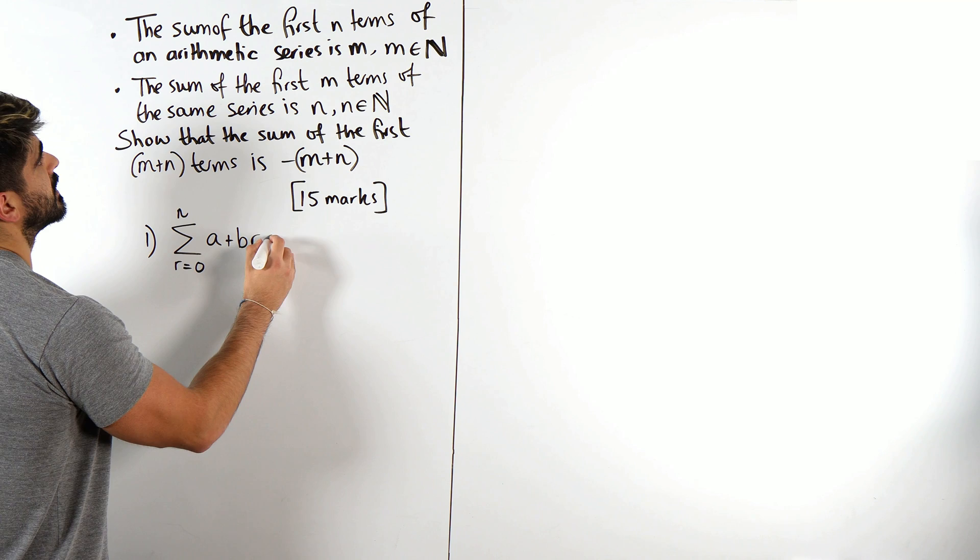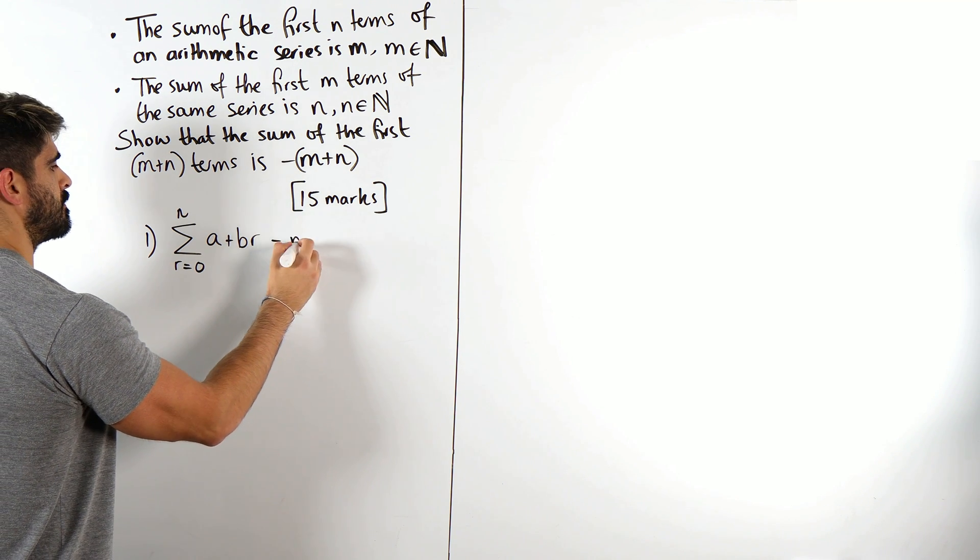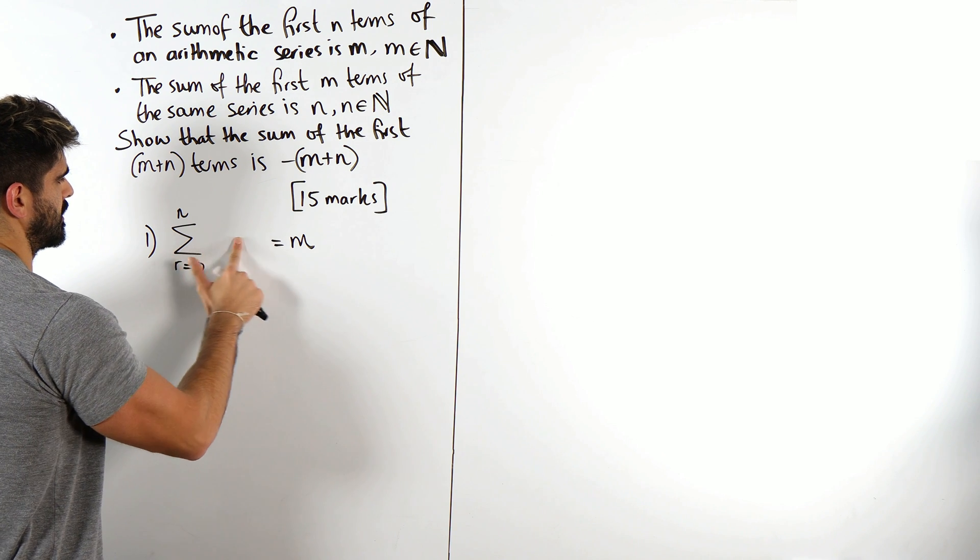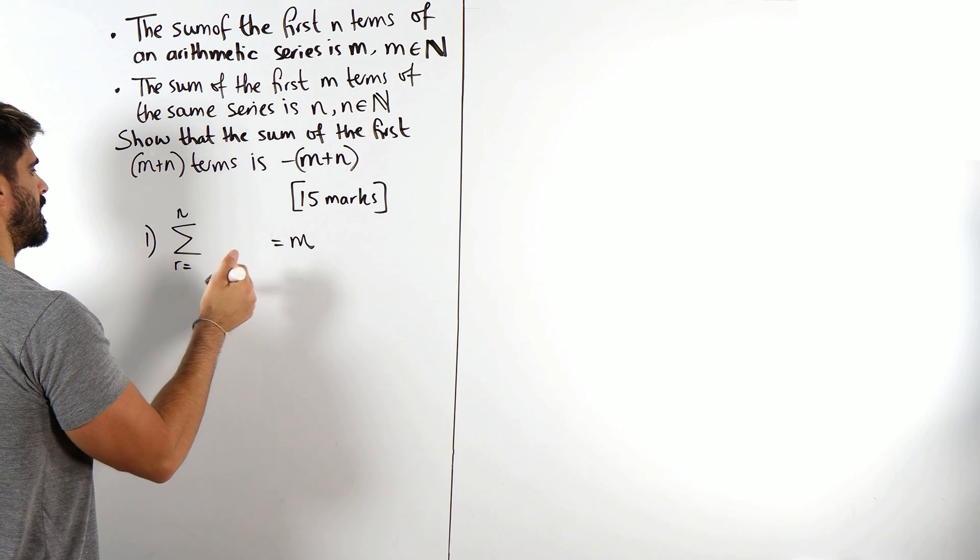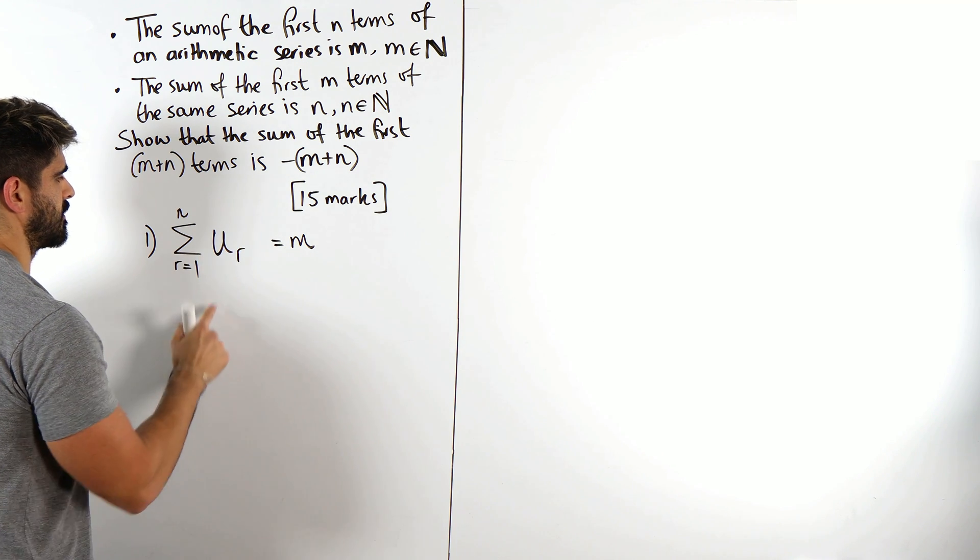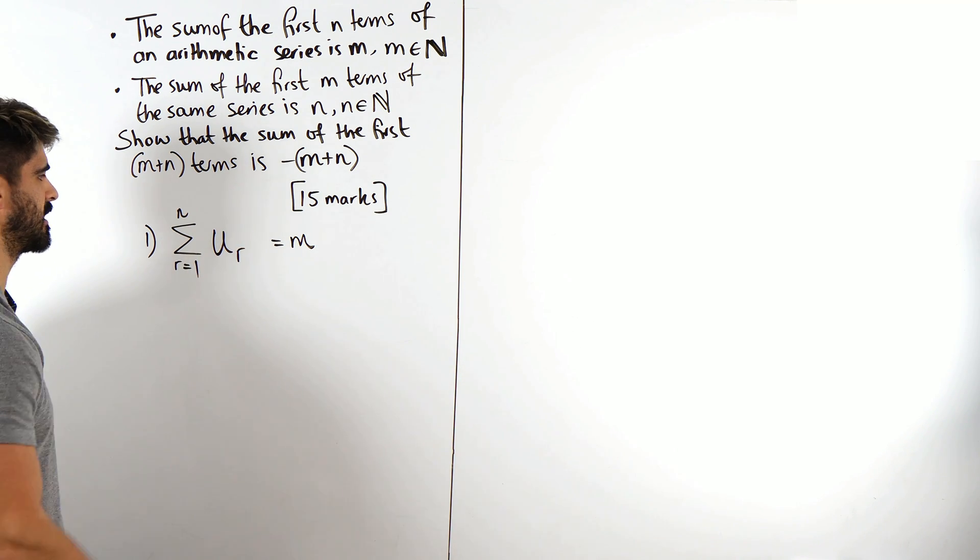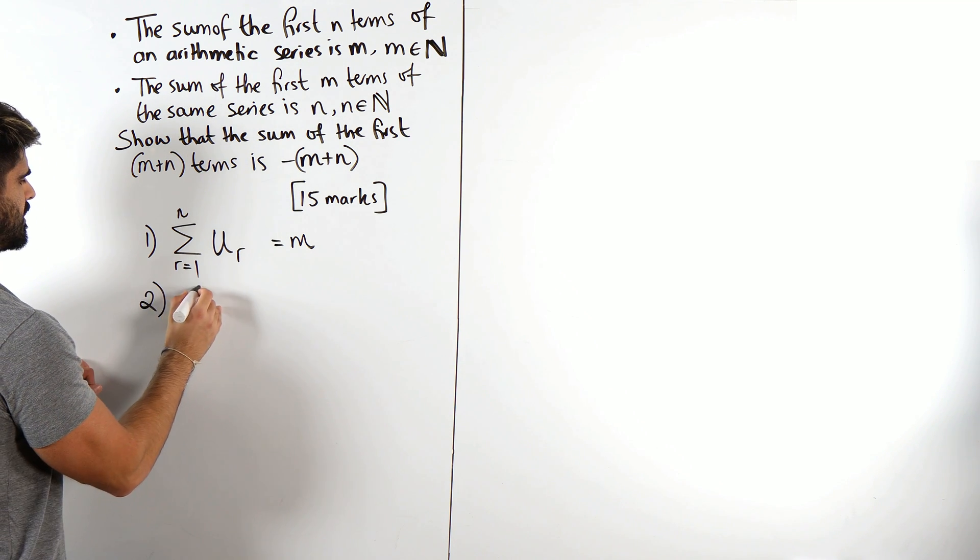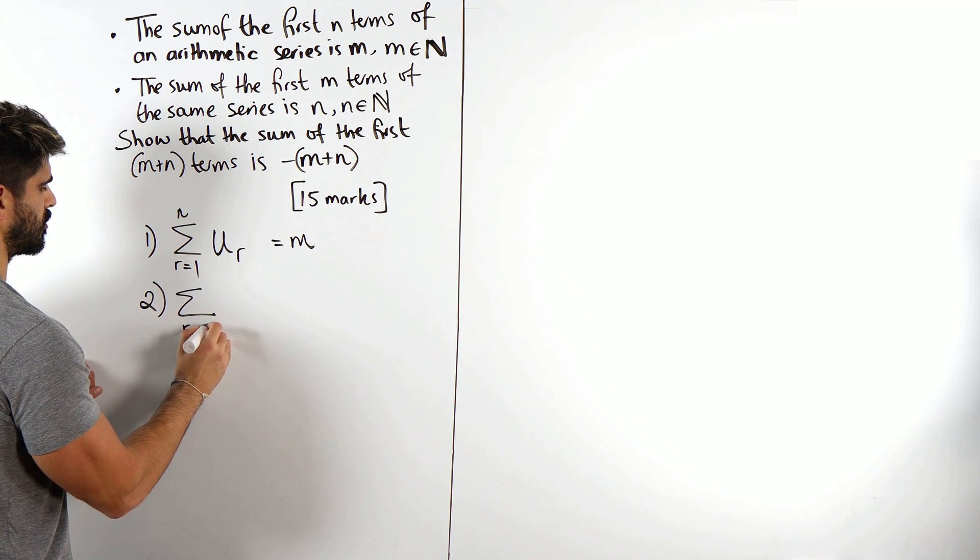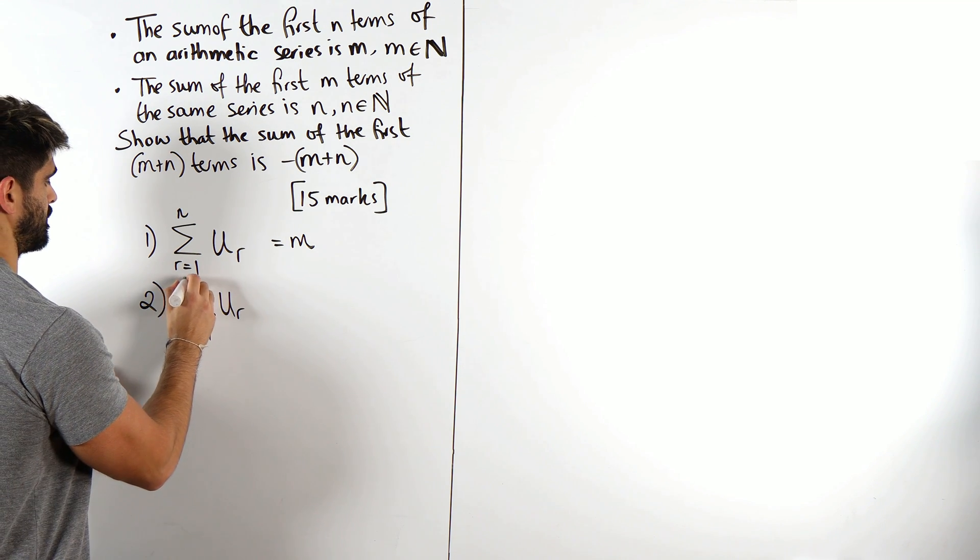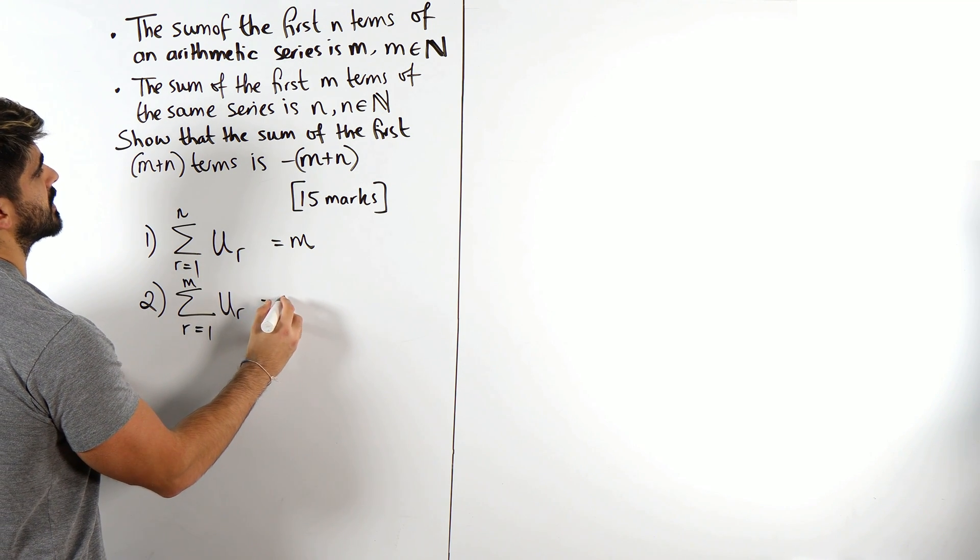Alright, I guess we just write down our formulas for each one and then somehow merge them. So for the first bit, the sum of the first n terms from r equals 1 to n of this arithmetic sequence, which I don't know what it is, we'll just say a plus br. Actually, I'll write it nicer to avoid confusion. So u1, u2, u3, etc.